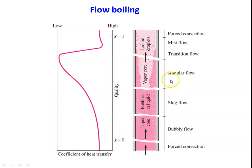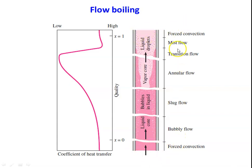The next region is annular flow, where vapour bubbles join at the core — the center axis of the pipeline — forming a vapour core at the center with liquid and bubbles near the wall. The vapour core diameter keeps increasing. In the transition region, there is more vapour at the center and a small amount of liquid near the wall. In mist flow, it is completely vapour with small liquid droplets. Further up, it becomes forced convection vapor again.